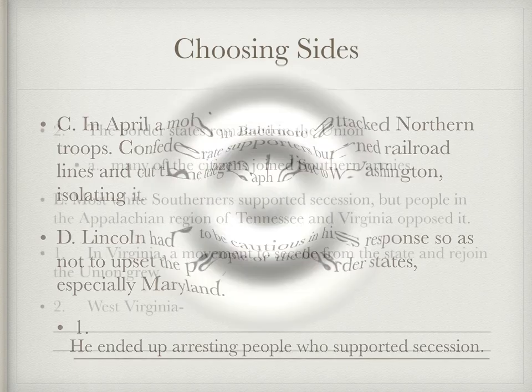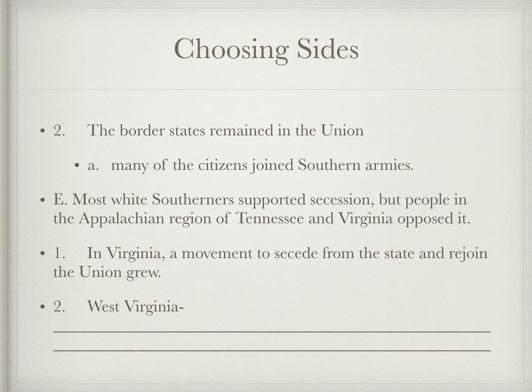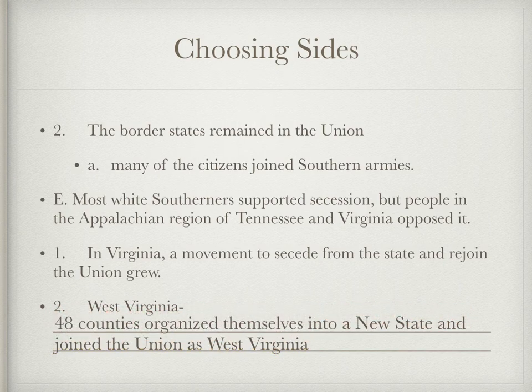The border states did stay with the Union. Unfortunately, many people who lived in them left and joined southern armies. But there were also people in the Confederacy who did not agree with secession — a lot of those were in Virginia. A group in the western part of Virginia, 48 counties, did not want to join the Confederacy. They banded together, organized themselves into a new state, and joined the Union as West Virginia.